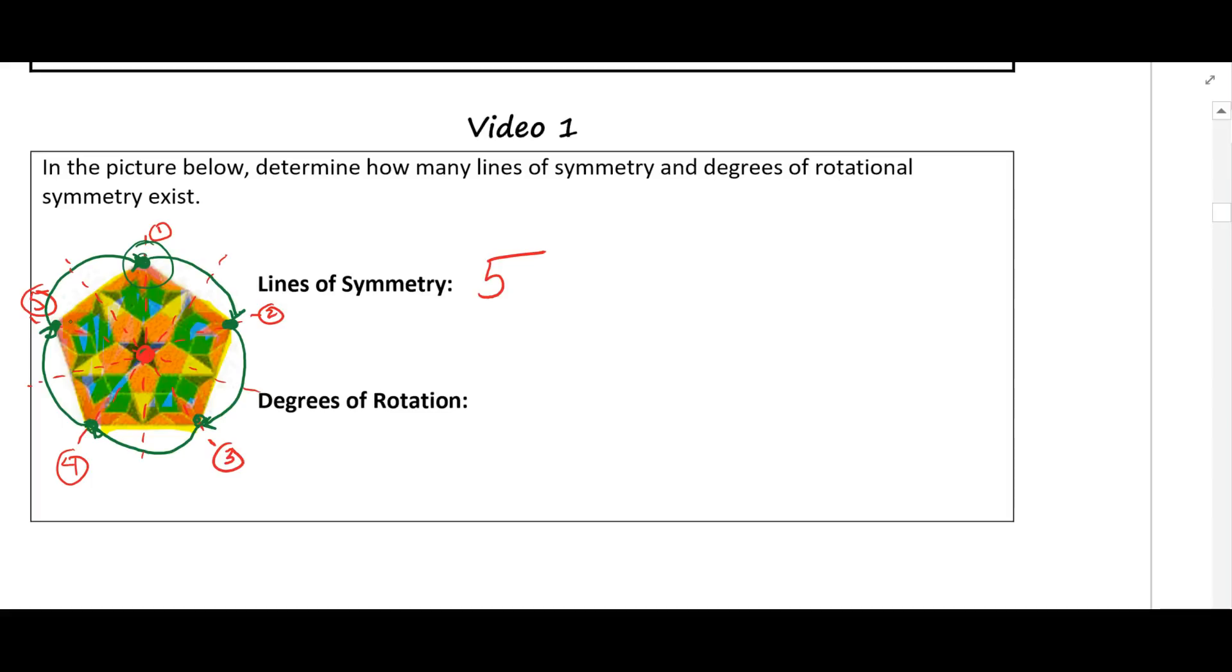So if I take this initial point here and rotate it to any of these other green points, the figure is going to look exactly like it does now. So when we're trying to figure out degrees of rotational symmetry, we want to figure out how many times did I have to rotate it to get it back to the beginning. I had 1, 2, 3, 4, 5. So that means that each time my degrees of rotation would be 360 divided by the number of times I had to rotate it to get back to the beginning, which would give me 72 degrees of rotation.